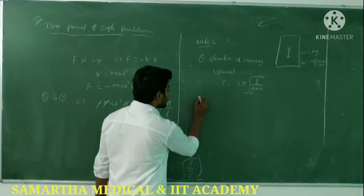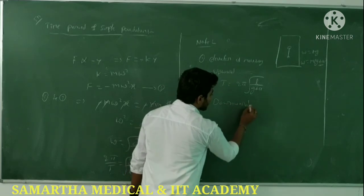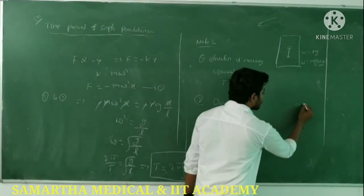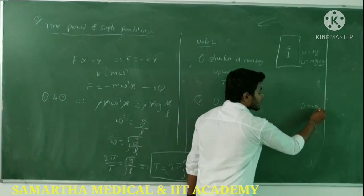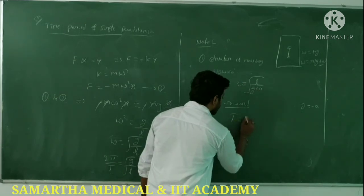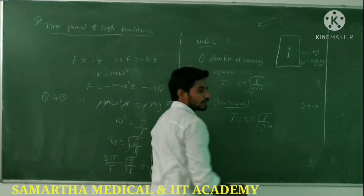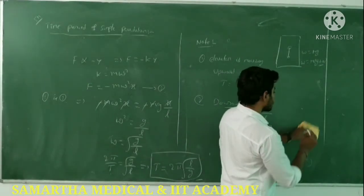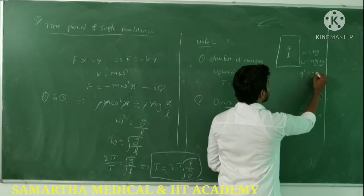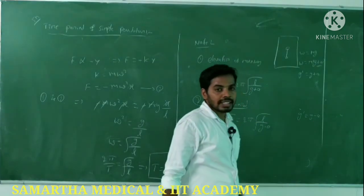Second case: if the elevator is moving downward with acceleration a, the effective gravity is g' = g - a, so the time period becomes T = 2π√(L/(g-a)).